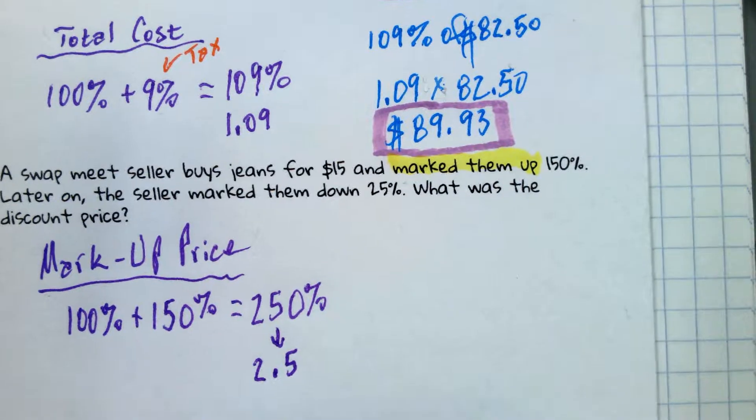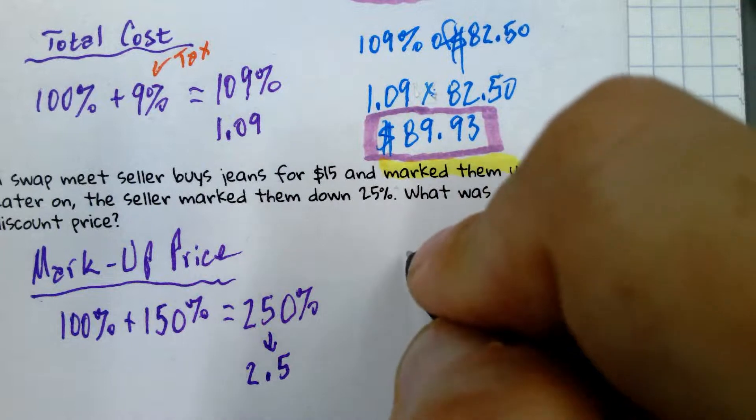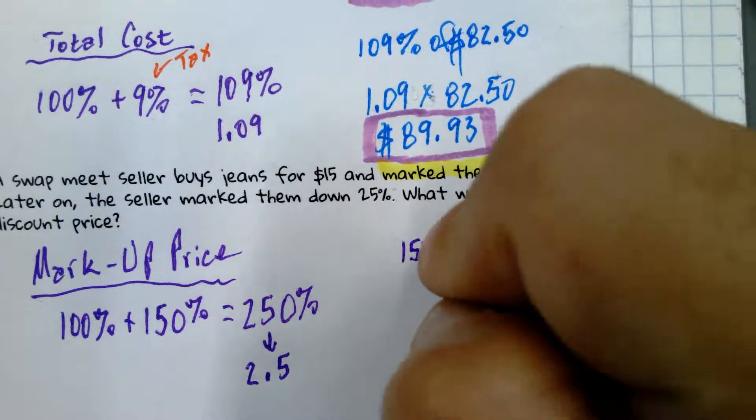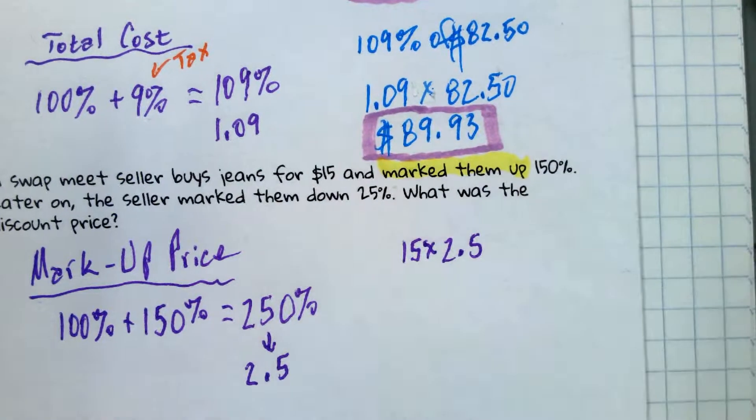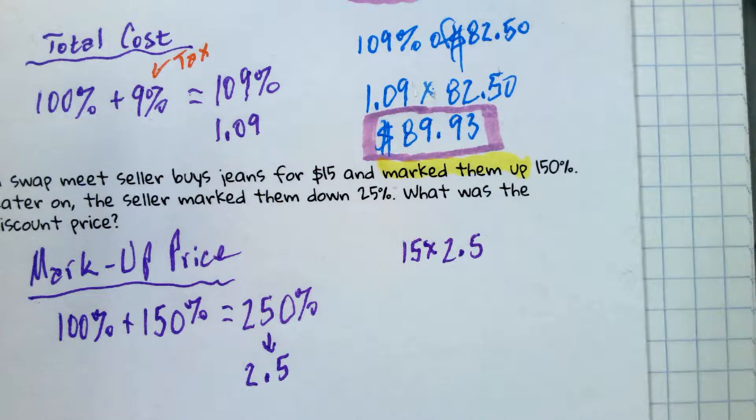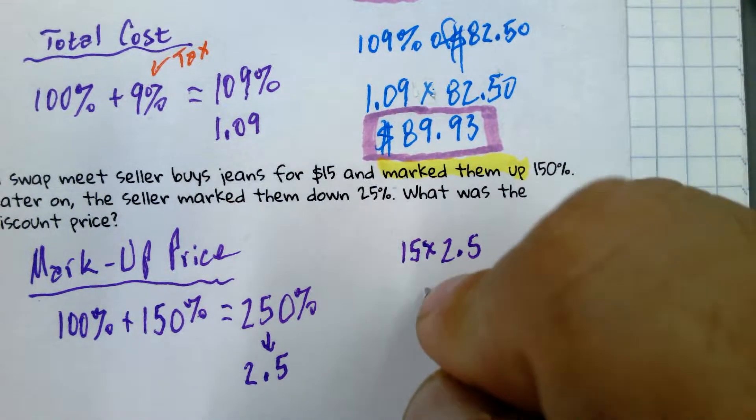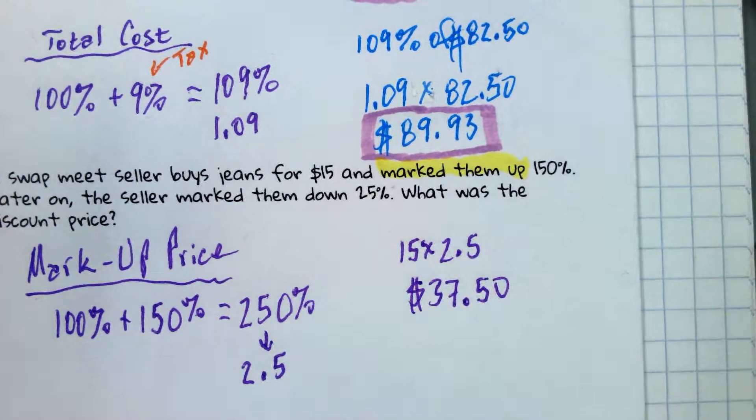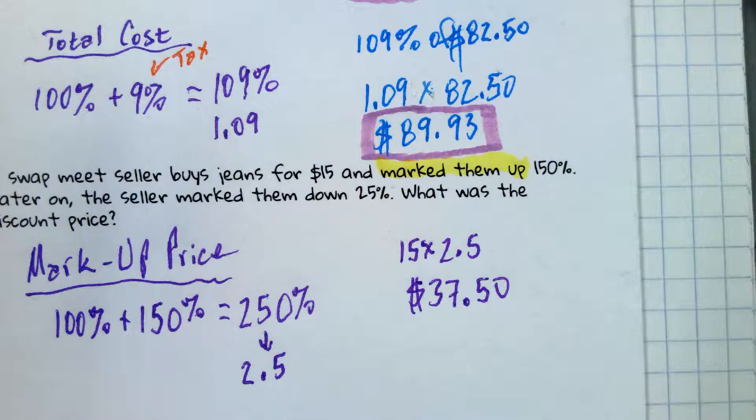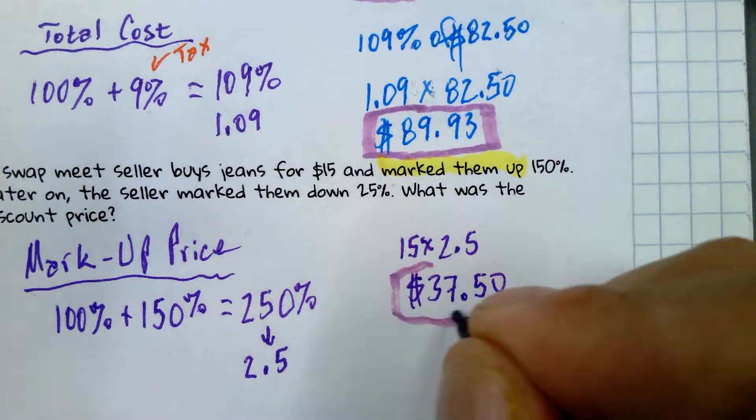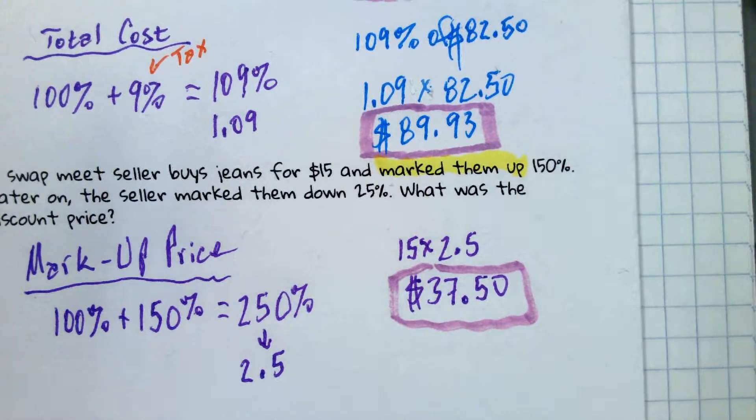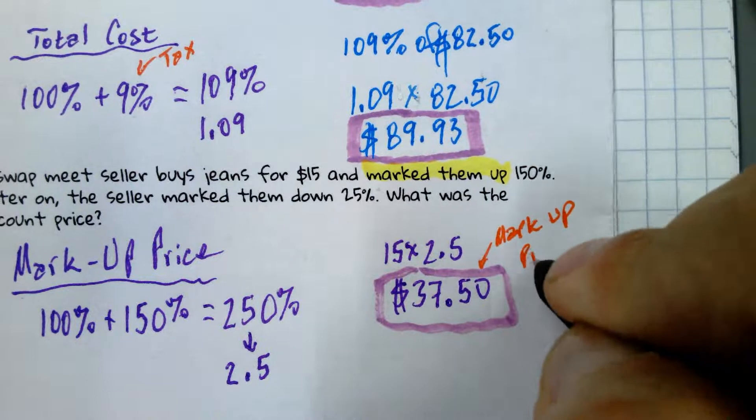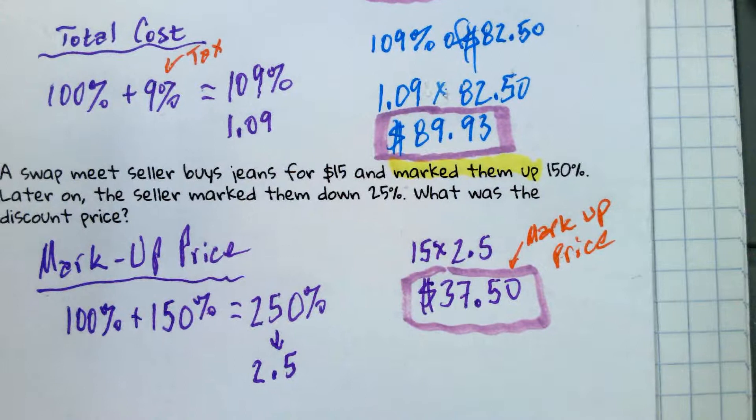So what we're going to calculate here is $15 times 2.5. That's $37.50. So that's the new price. So this is the new price for those jeans. This is the markup price.